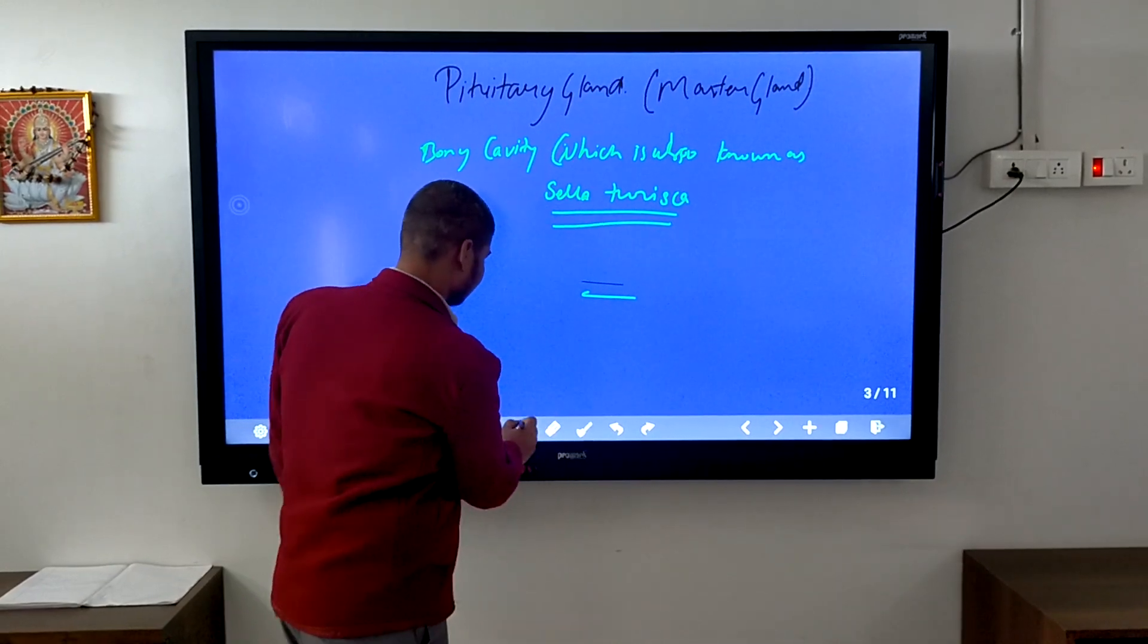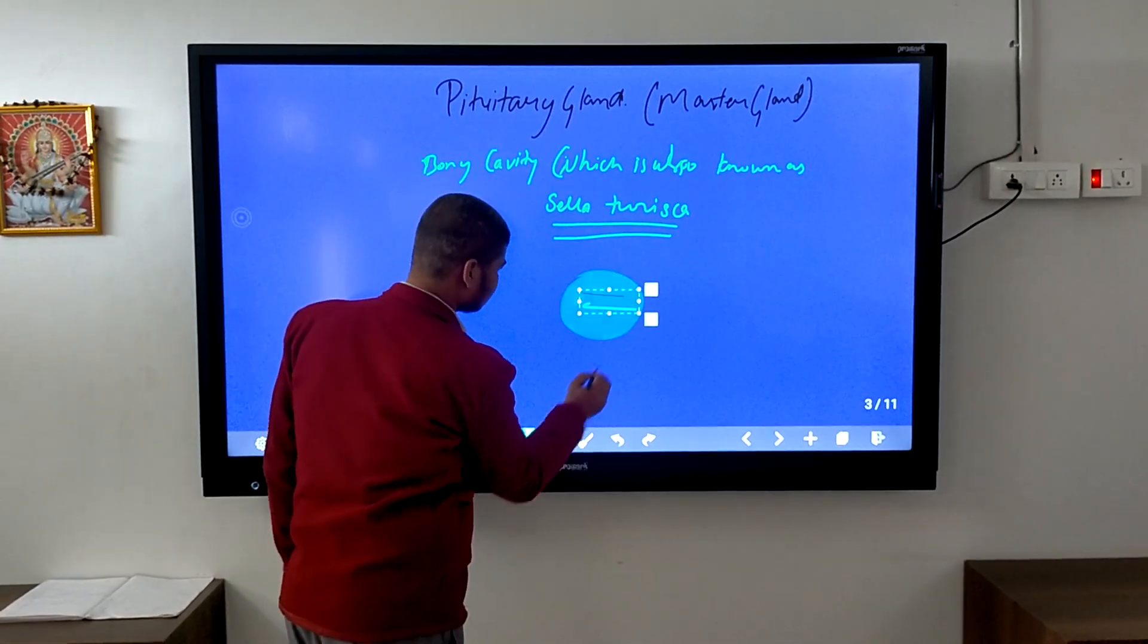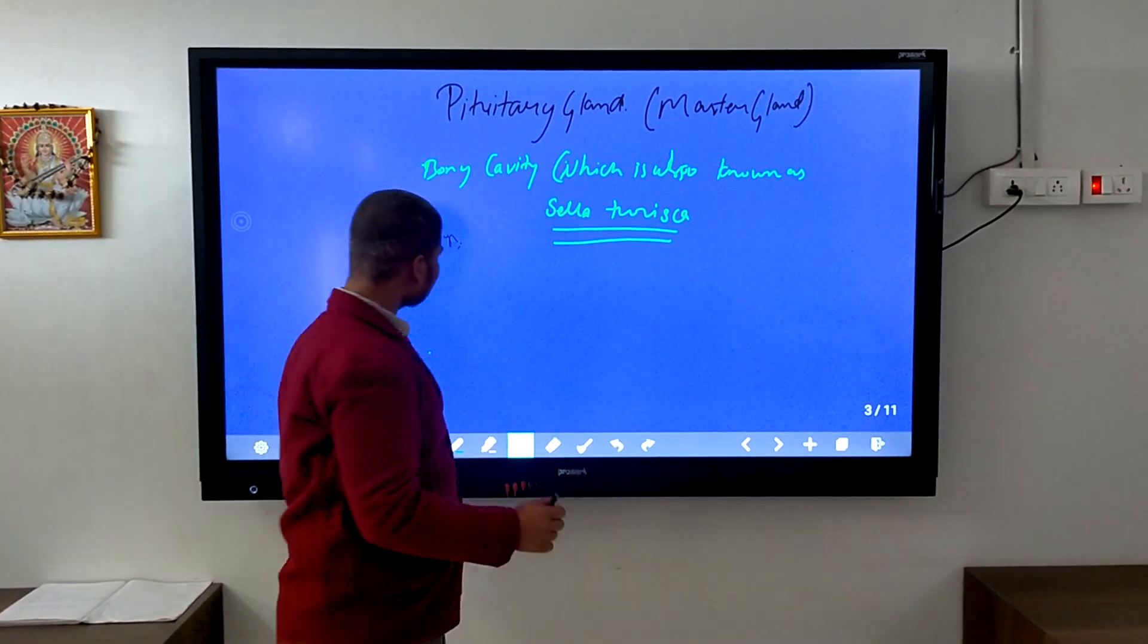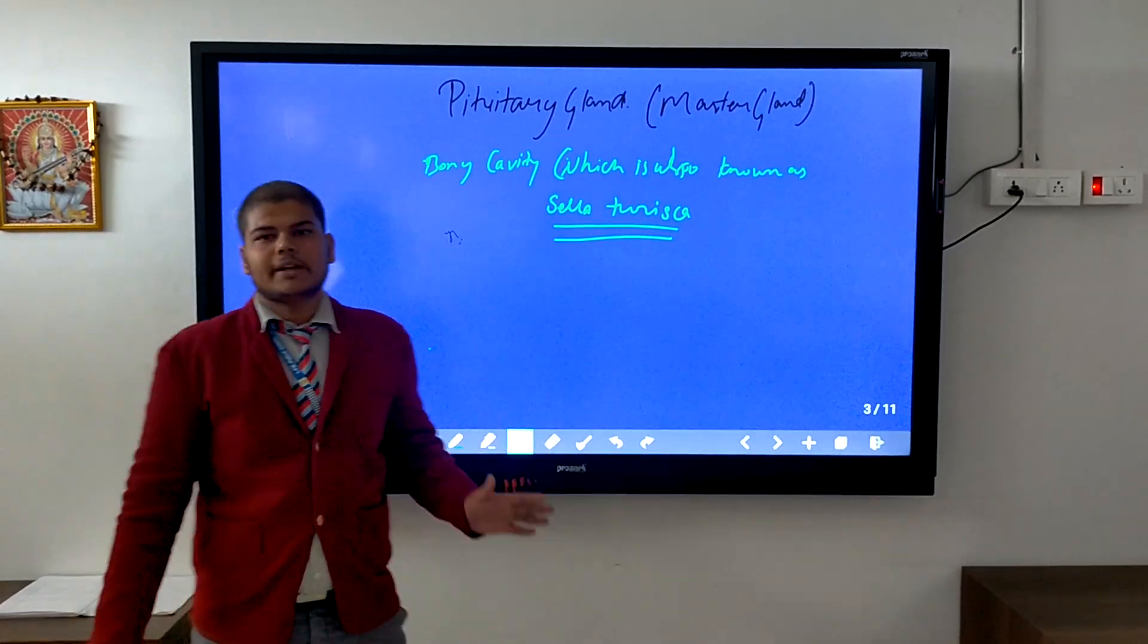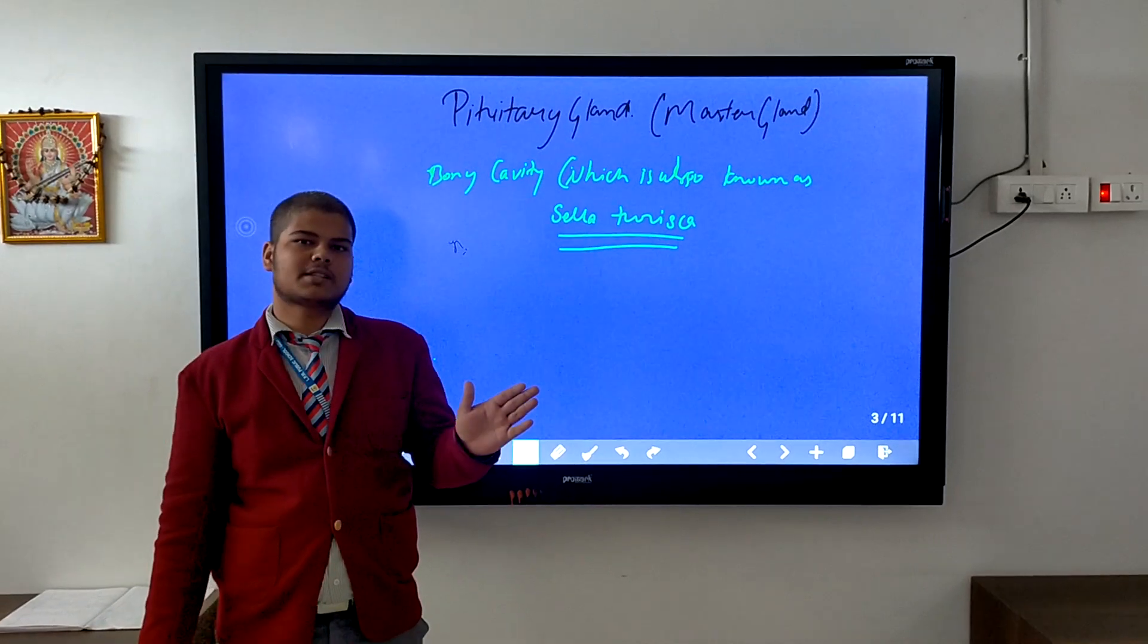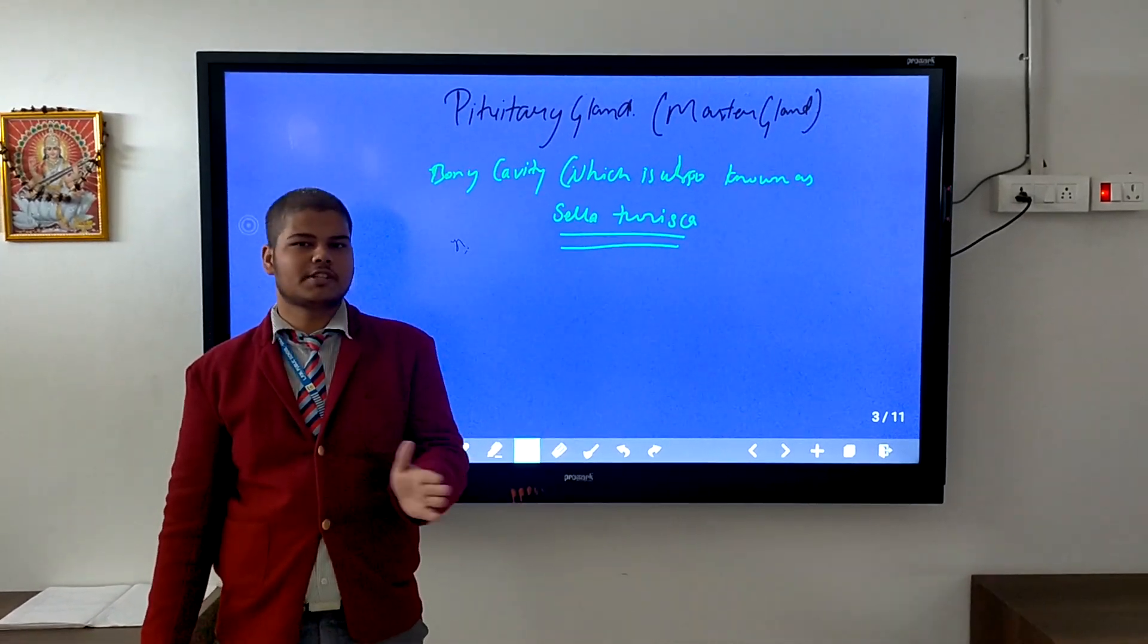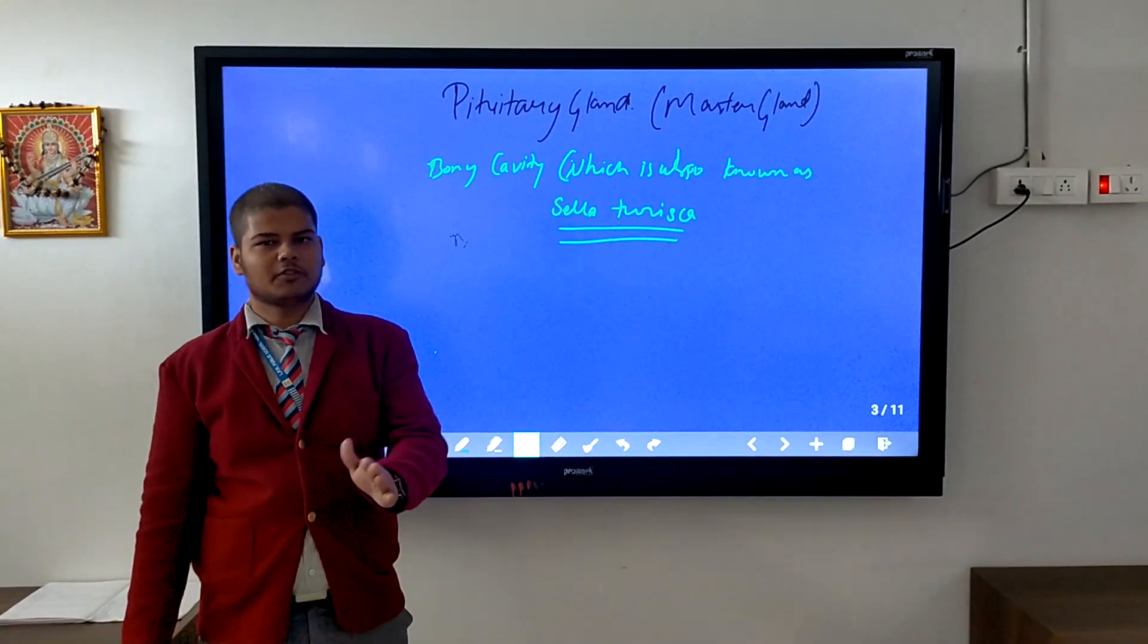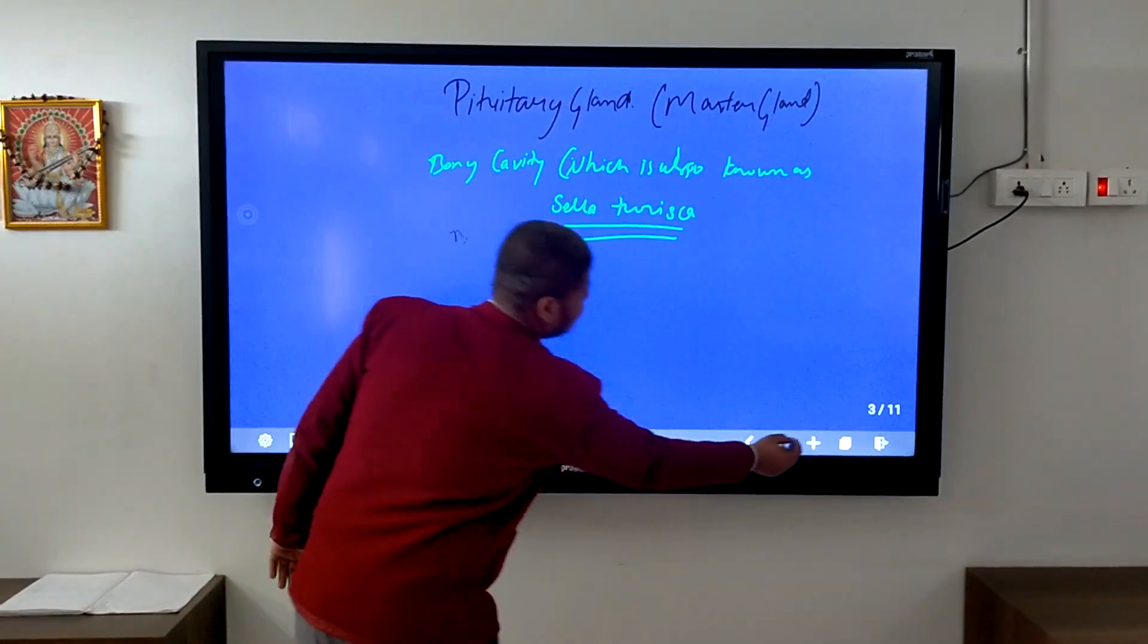When examining the pituitary, you can divide it into two parts. First is adenohypophysis, and second is neurohypophysis.